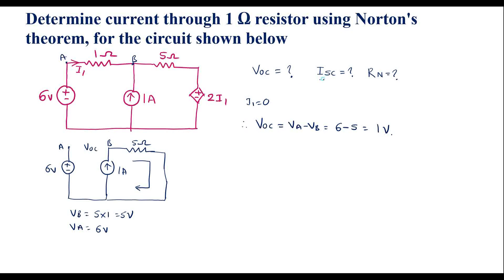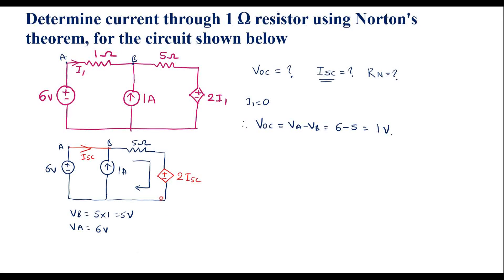Now we calculate ISC, the short circuit current. The AB terminal, which was open, is now shorted. When we short terminal AB, current flows through this shorted path — that current is ISC. Since current is now flowing, the dependent voltage source 2I1 reappears, but now I1 is replaced by ISC, so it becomes 2·ISC.